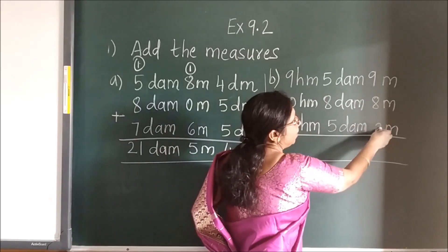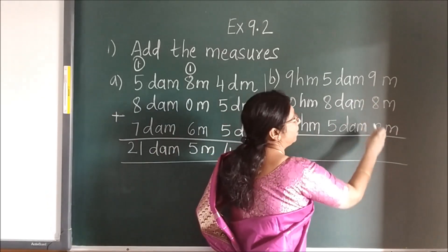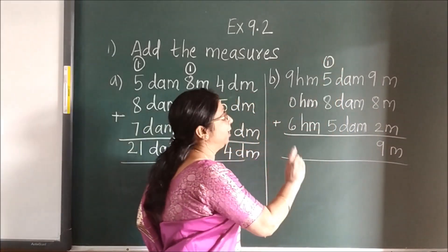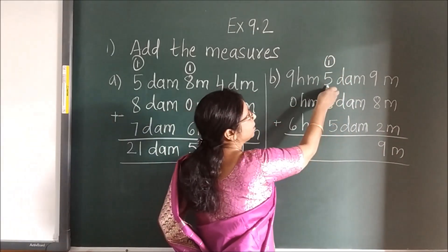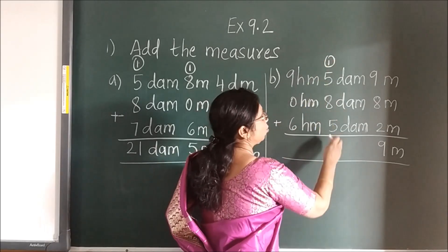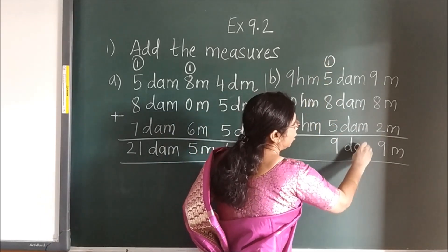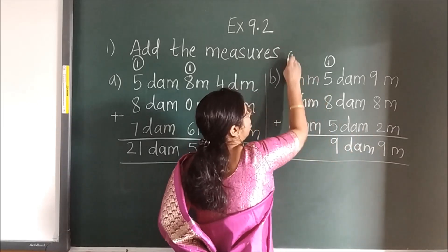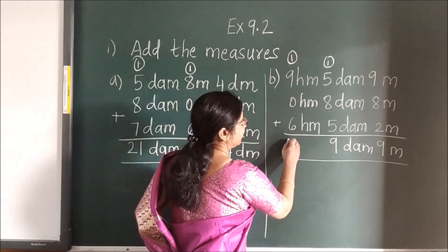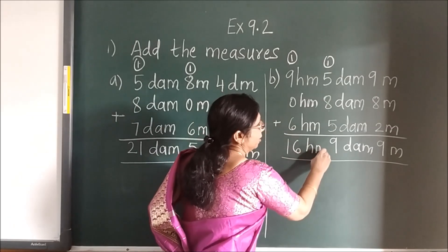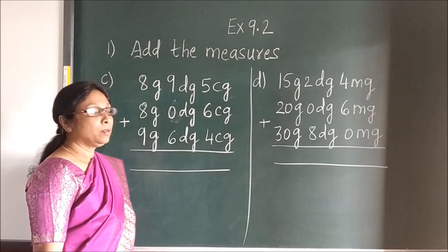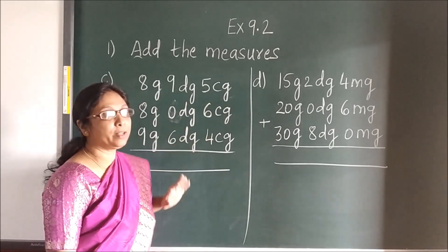Now here — 8 plus 2 is 10, 10 plus 9 is 19, write 9 and carry 1. Again — 5 plus 5 is 10, 10 plus 8 is 18, 18 plus 1 is 19, so write 9 and carry 1. Again — 9 plus 1 is 10, 10 plus 6 is 16. In this way you can add.